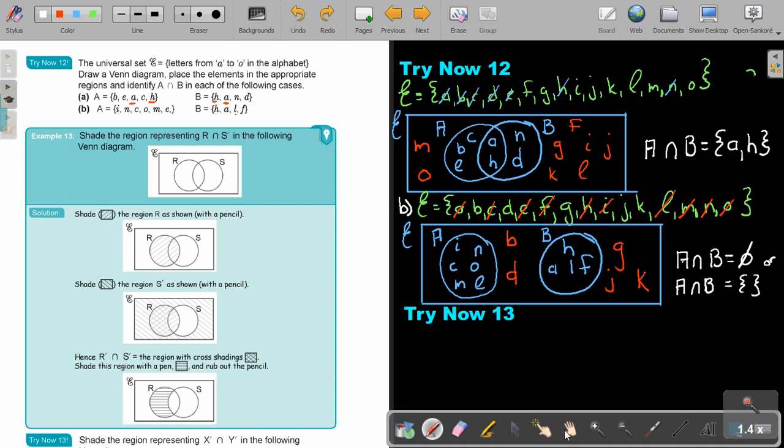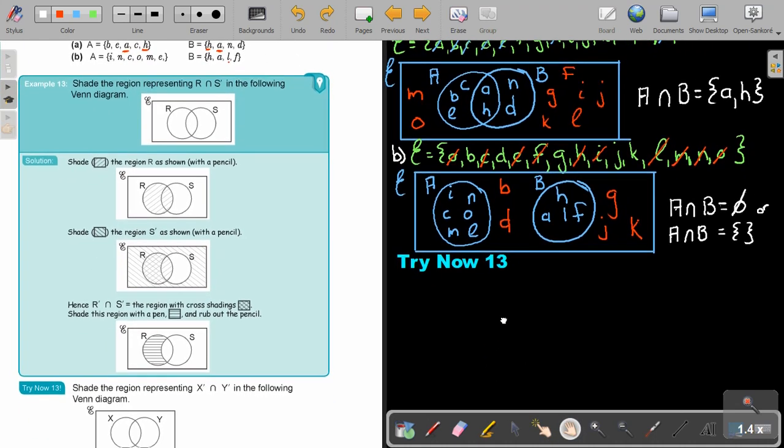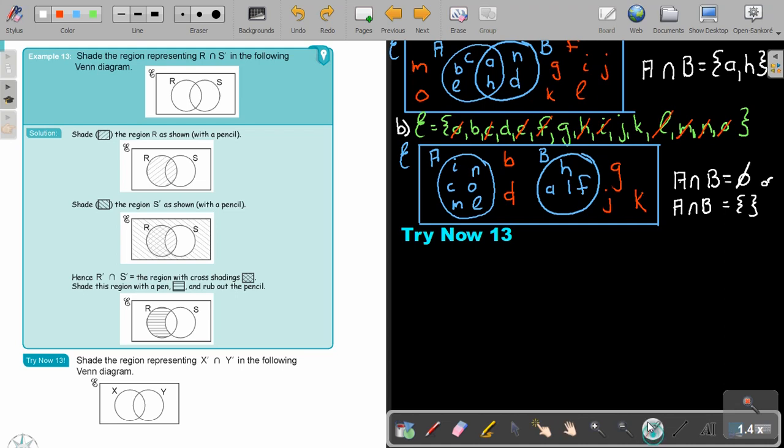Okay, let's look at example 13. Shade the region represented by this using the Venn diagram. Okay, let's just focus on shading and then I'll show you my number method. So first the shading, R. Just shade R. Just R. Then S complement. That means everything that's not in S. You see there's S. But if the direction was like this, change the direction.